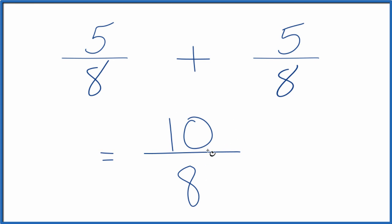And we could simplify this. We could divide both by 2, since they're even numbers. 10 divided by 2 is 5, 8 divided by 2 is 4. So this is simplified.